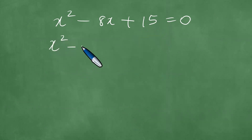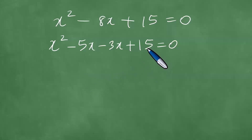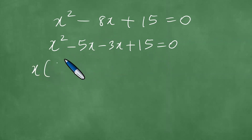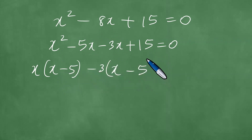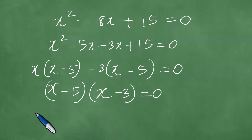Factoring, this is x squared minus 5x minus 3x plus 15 equals zero, because minus 5x and minus 3x have a product of 15x squared and a sum of minus 8x. Pulling out the highest common factor gives x minus 5, times x minus 3, equals zero. Therefore x is 5 or x is 3.